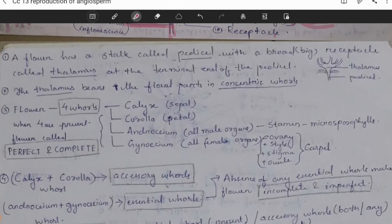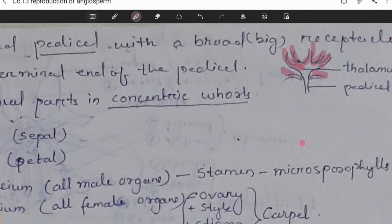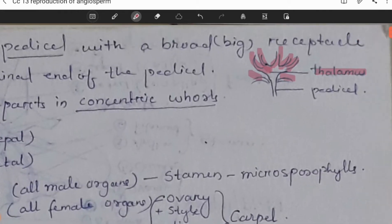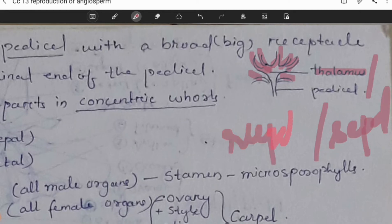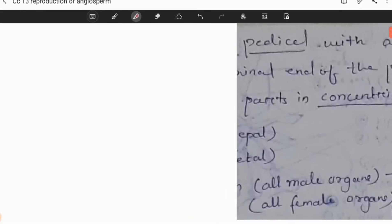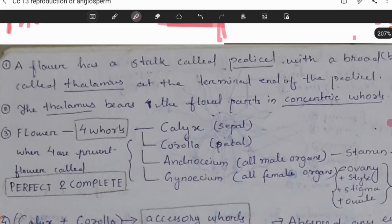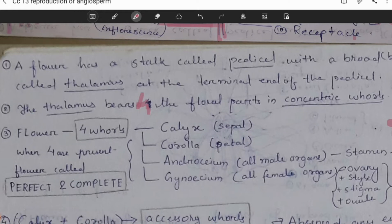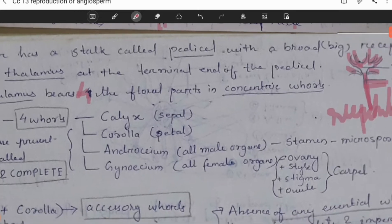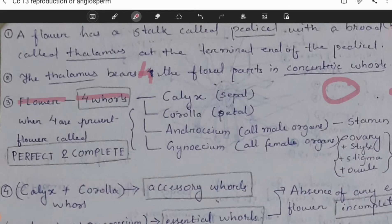A flower has a stock called the pedicel with a broad receptacle called the thalamus at the terminal end. The thalamus bears four floral whorls arranged concentrically — that is, in a circular pattern. The flower has four whorls.